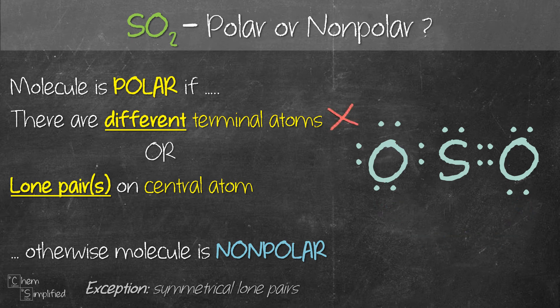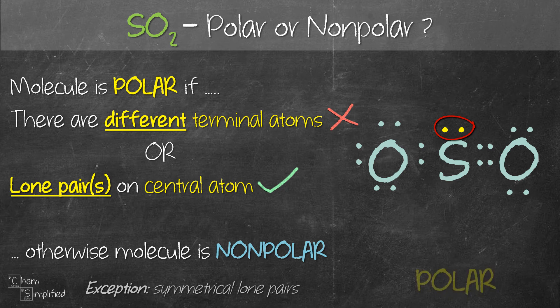So we move to the second criteria: we need to have lone pairs on the central atom. If we look at the central atom, which is sulfur, there is one lone pair — the yellow color lone pair. So that means SO2 is a polar molecule.